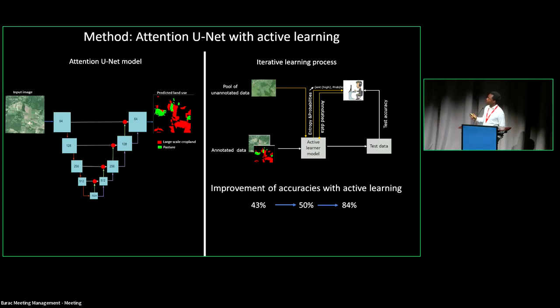When we did our first experiment, the accuracy was really low, but through the process of iterative active learning classes, meaning involving human in the loop, we were able to increase the accuracy from 43 to 84%.